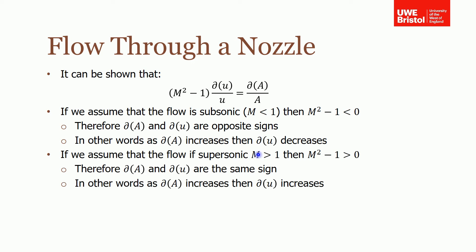For supersonic flow where M is greater than one, M squared is also greater than one, so M squared minus one is positive. This means the change in velocity and the change in area now have the same sign — if we increase the cross-sectional area, we also increase the velocity. This is quite an interesting result that applies specifically to supersonic flow.